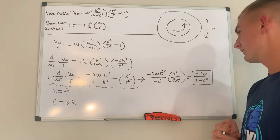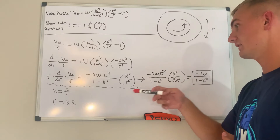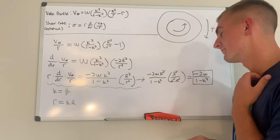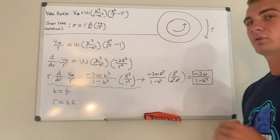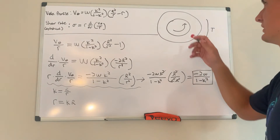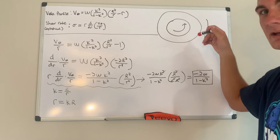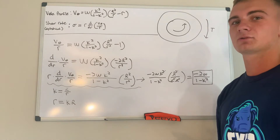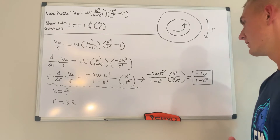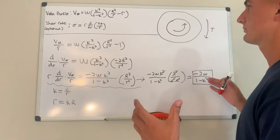We notice we end up with a negative value here, but it's not something to be too concerned about, because torque can be measured in one direction as positive and the other direction as negative, just depending on whether you set counterclockwise or clockwise as positive. So we go ahead and take this expression and conceptually look at how to calculate the torque for the inner cylinder.